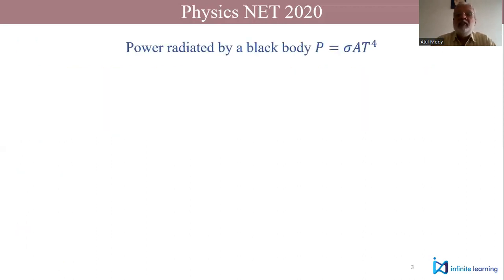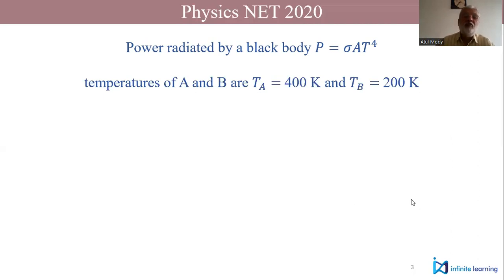Power radiated by a black body is given by P = σAT⁴, where σ is the Stefan constant, A is the surface area of the black body, and T is the temperature, the surface temperature of the black body.